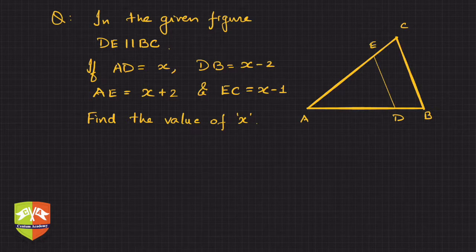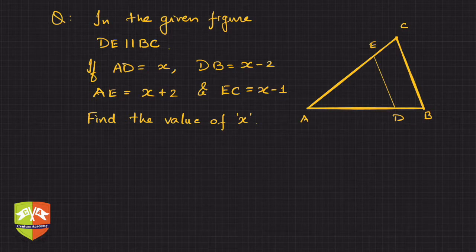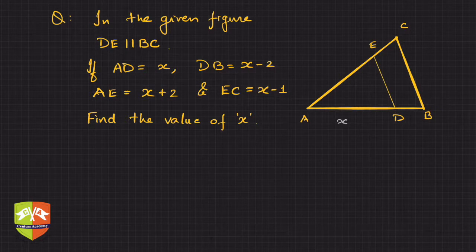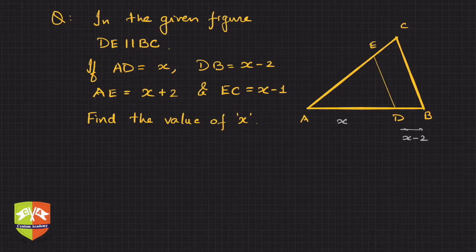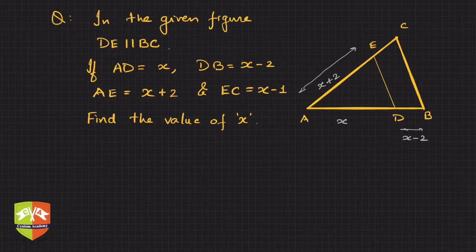In this question, it is given that DE is parallel to BC, and clearly ABC is a triangle. AD is given to be equal to x, DB is x minus 2, AE is x plus 2, and EC is x minus 1.